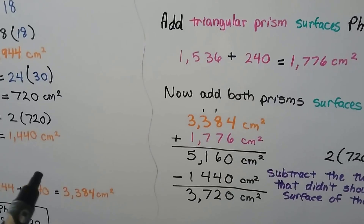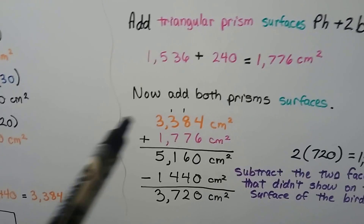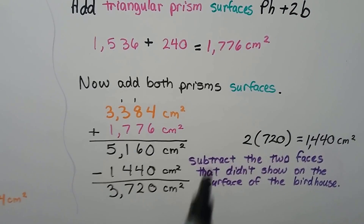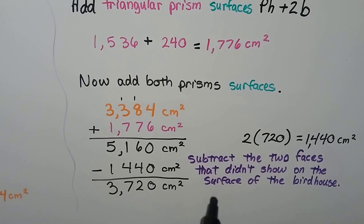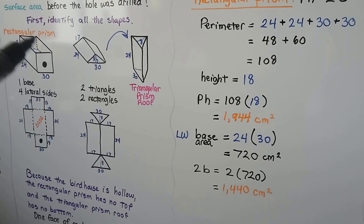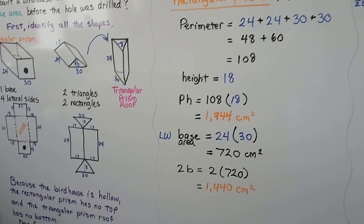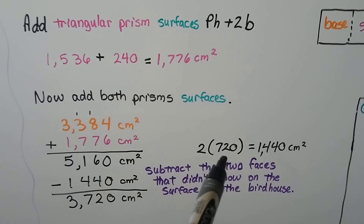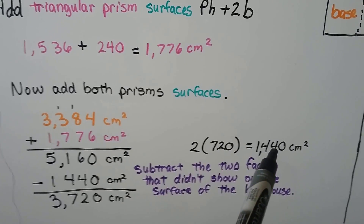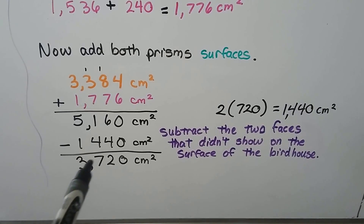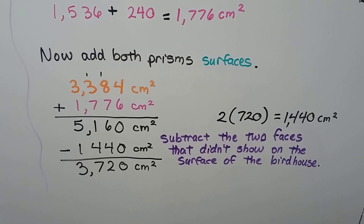We add the total from the rectangular prism and the total from the triangular prism together and get 5,160. But we need to subtract the two faces that didn't show on the surface of the birdhouse — the top of the rectangular prism and the bottom of the triangular prism. Both were 720, so we subtract 1,440 centimeters squared from 5,160, giving us a total surface area of 3,720 centimeters squared.